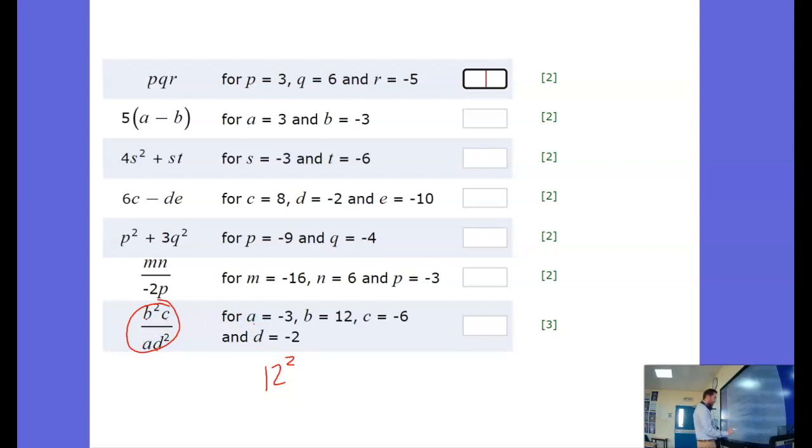So we've got b squared, 12 squared, times c minus 6. I'm just going to put a times in there, you can put brackets. Ad squared is on the bottom so a is minus 3.